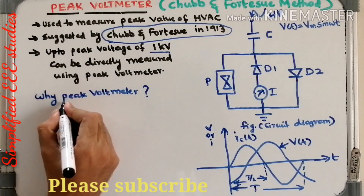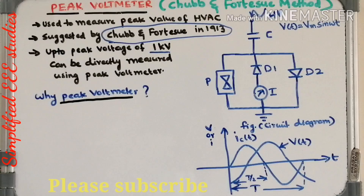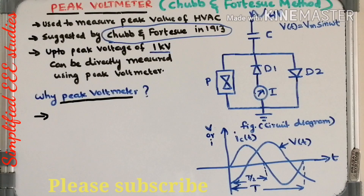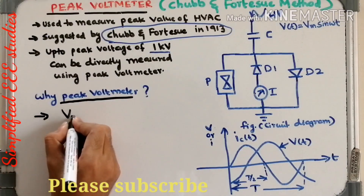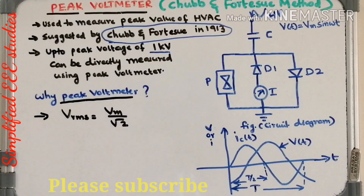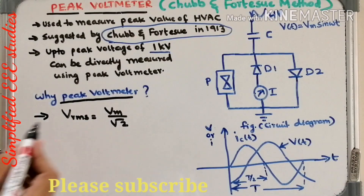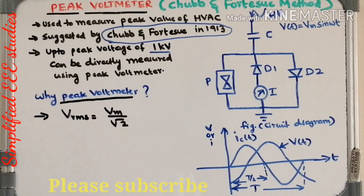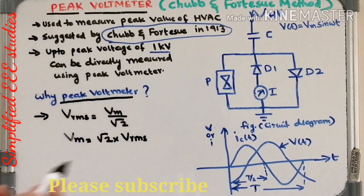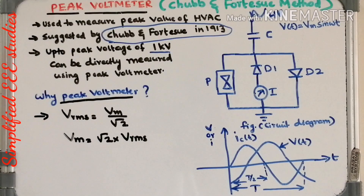Now let me ask one question: what is the purpose of using a peak voltmeter? In general, if the applied voltage is sinusoidal, you can write Vrms equal to Vm divided by root 2, where Vrms is the RMS value and Vm is the peak value. This Vrms can be measured with the help of a voltmeter, and from this you can calculate Vm equal to root 2 into Vrms. However, this satisfies only for sinusoidal voltage — if the applied voltage is not sinusoidal, this method fails.